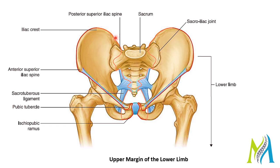Continuing along the curve of the ilium, which is called the iliac crest, and then continuing posteriorly and superiorly to the posterior superior iliac spine — this imaginary line starting from the pubic tubercle to the posterior superior iliac spine separates the lower limb from the anterior and lateral abdominal wall. Continuing from the posterior superior iliac spine along the dorsolateral surface of the sacrum and then to the coccyx posteriorly separates the lower limb from the muscles of the back.